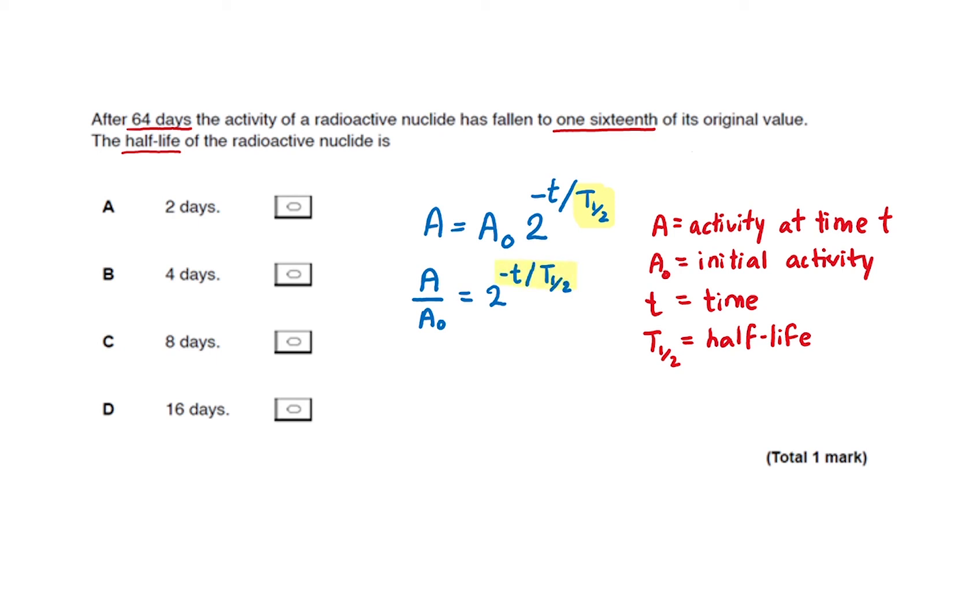To bring the power down and to get rid of 2 here, we need to log both sides, and that is log to the base 2.